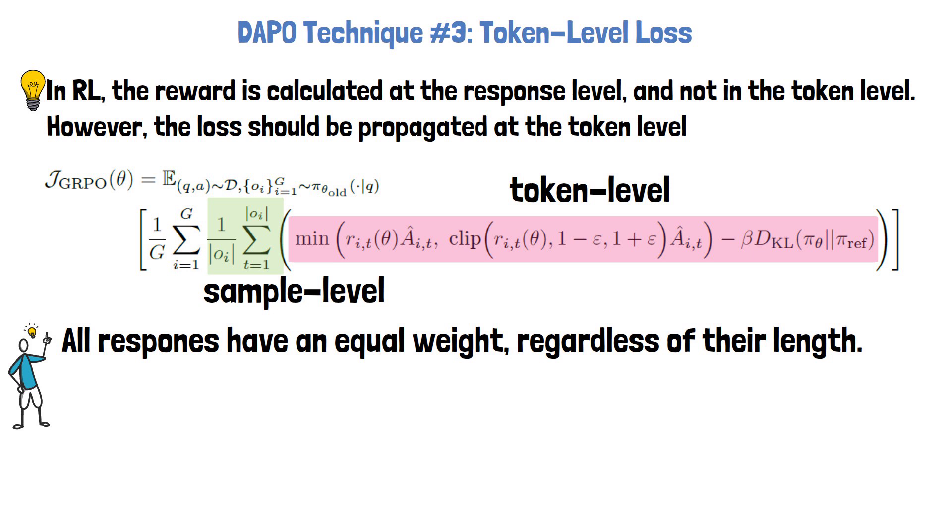This effectively gives equal weight to each response, regardless of its length. However, sampled responses vary in their length. For high quality long responses, this slows down learning reasoning patterns from these responses, and poor quality long responses may not be penalized enough.